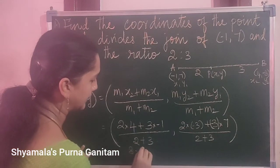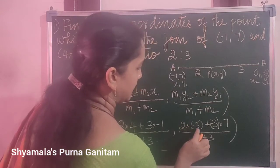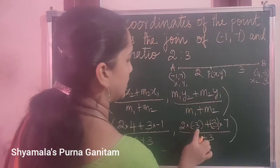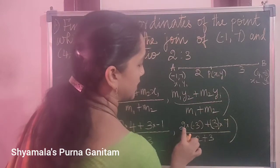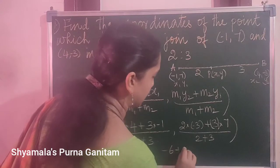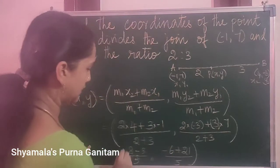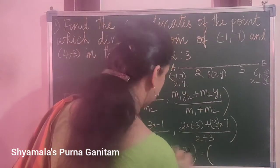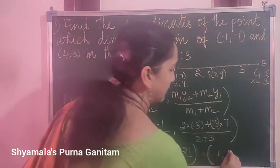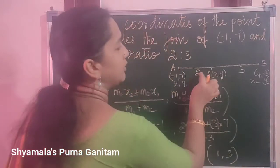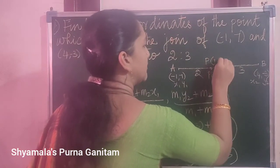Simplifying: 8 minus 3 divided by 5, and the next one is minus 6 plus 21 divided by 5. So 5 by 5 gives 1, and minus 6 plus 21 is 15, and 15 by 5 is 3. So the point dividing the line segment in the ratio 2:3 is (1, 3). This is the answer.